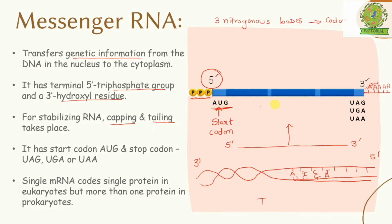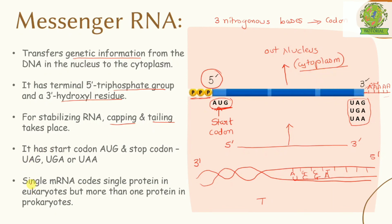So in the mRNA structure we have: a start codon (always AUG), a stop codon (any one of the three options), capping at the 5' end with a triphosphate group, and tailing at the 3' end. This capping and tailing stabilizes the entire mRNA strand so it can exit the nucleus and move into the cytoplasm without being destroyed by exonuclease enzymes, and be used for protein synthesis.